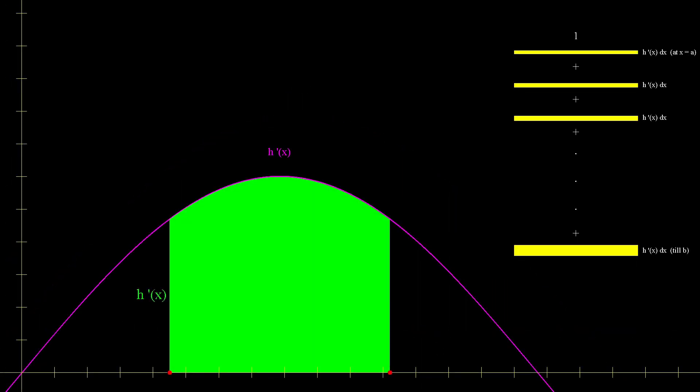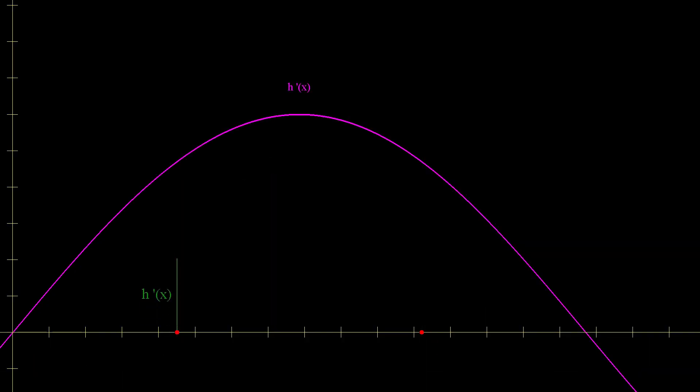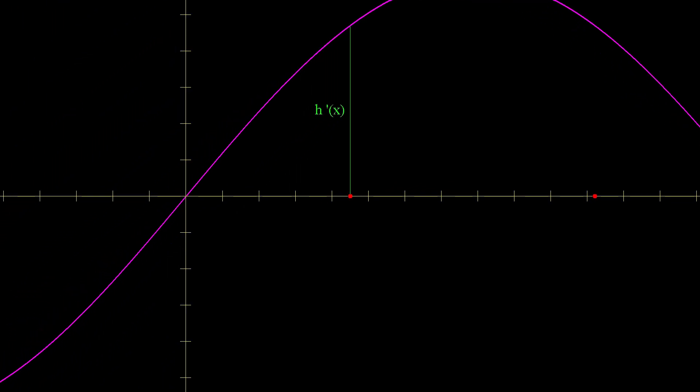We can do something similar to what we did previously. From the graph of h prime, we can find dh of x for all points between these two intervals a and b, then sum them all up to find the net area of the rectangle changed between these two intervals. Starting from a, we see that h prime is just the distance from the x-axis to the value of h prime at a in the y-axis. Now we know that dh of x is equal to h prime dx at that point.